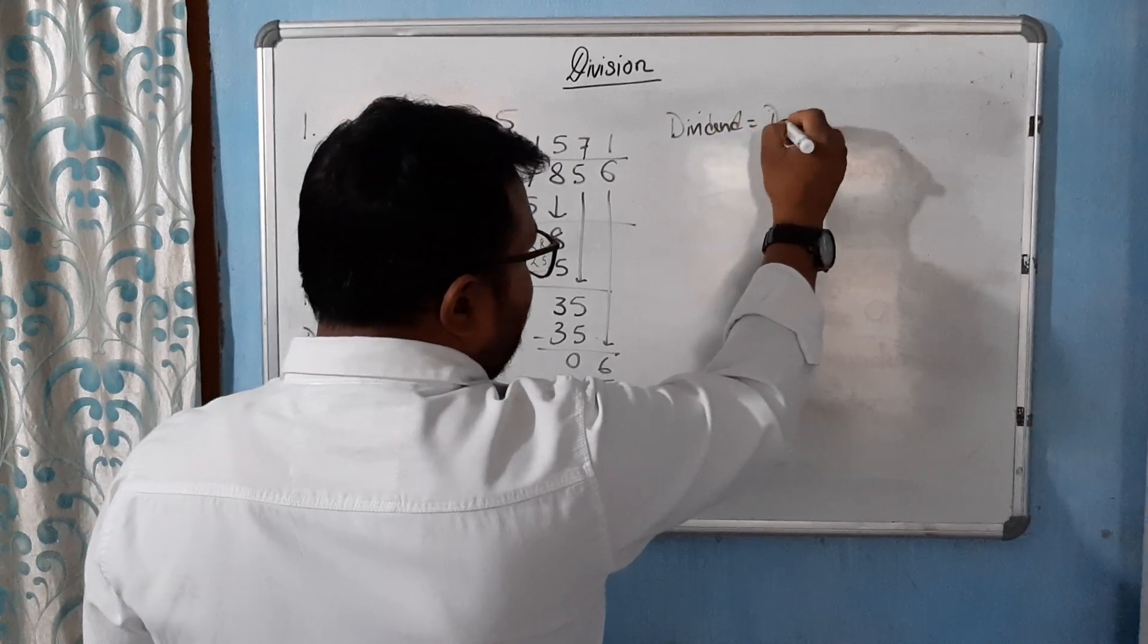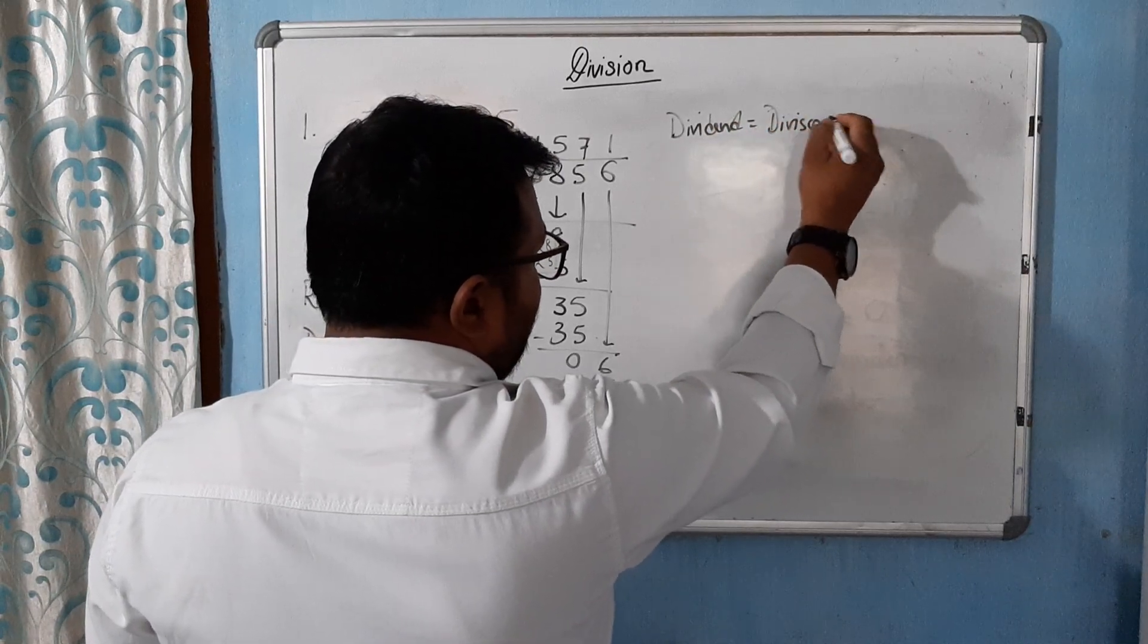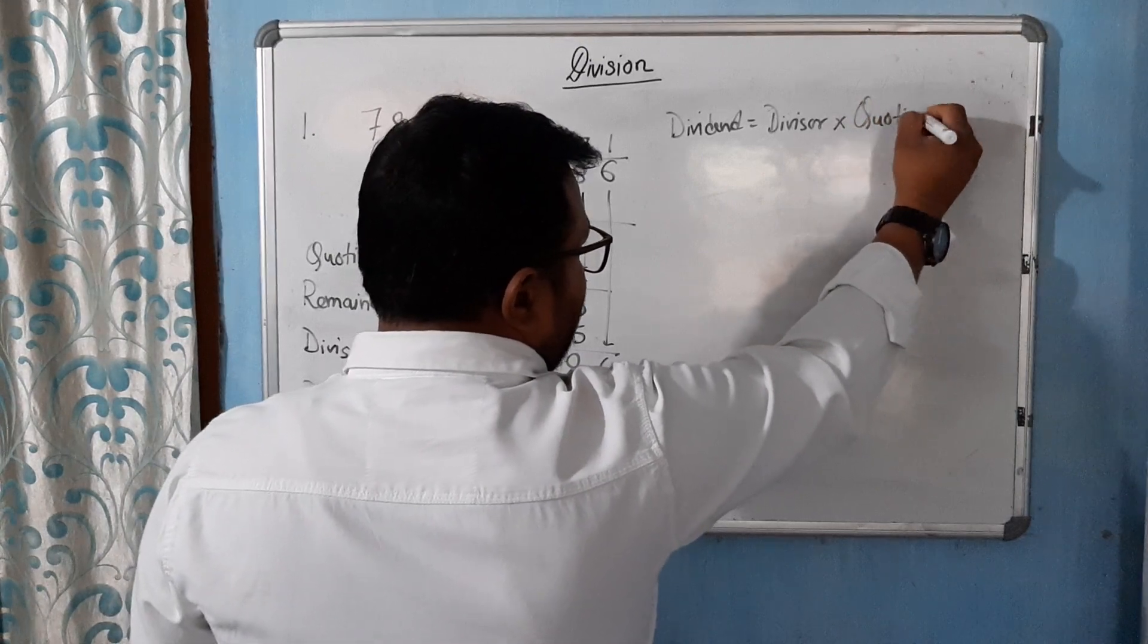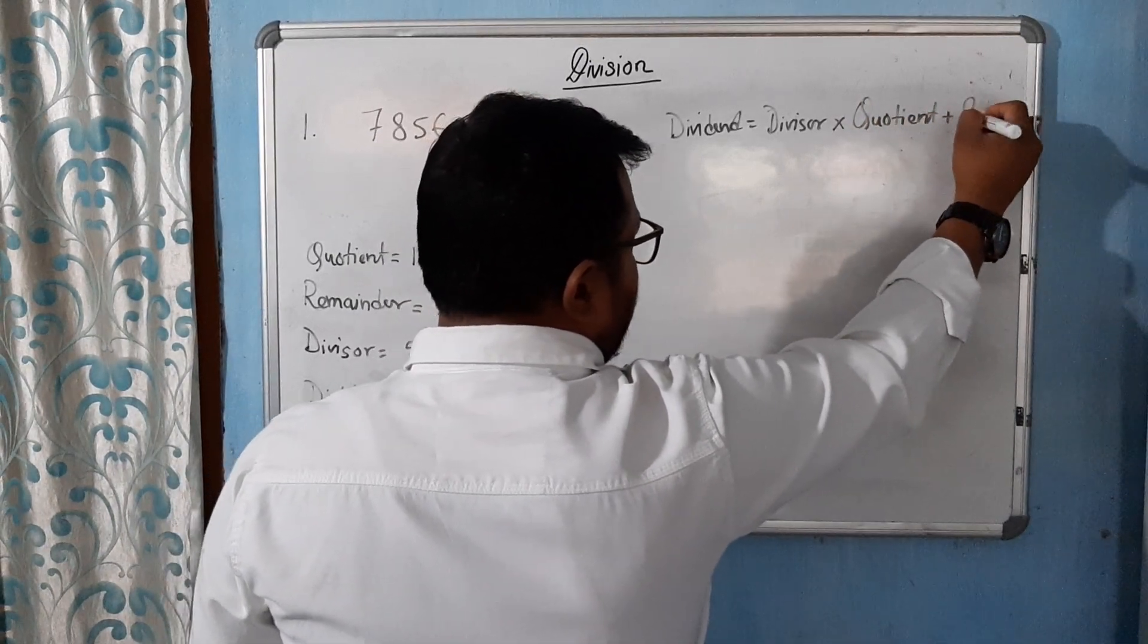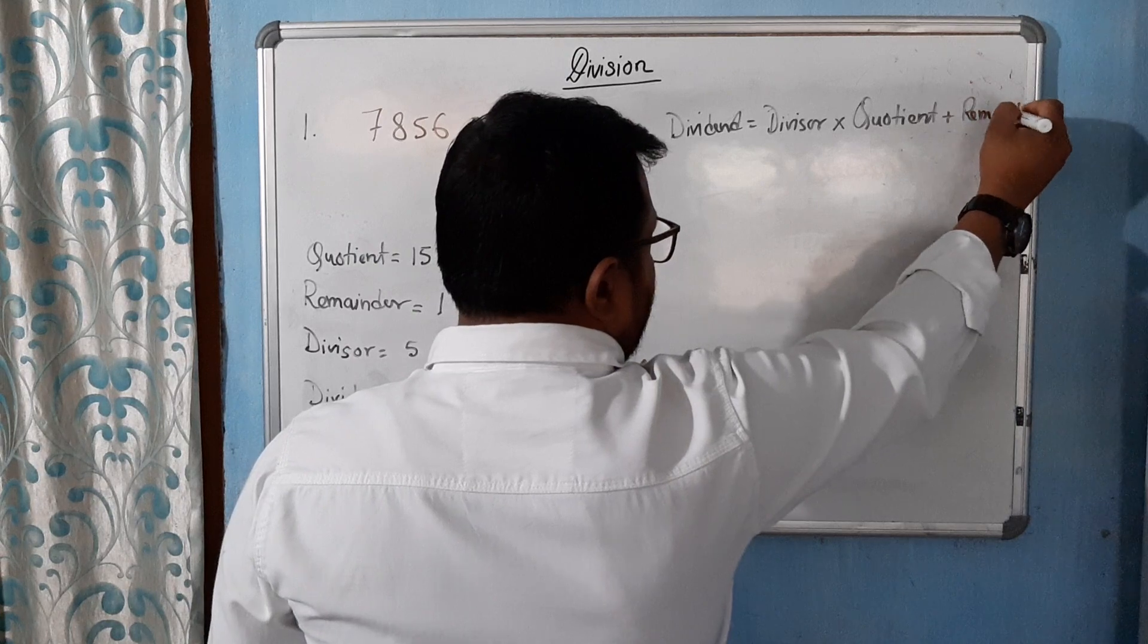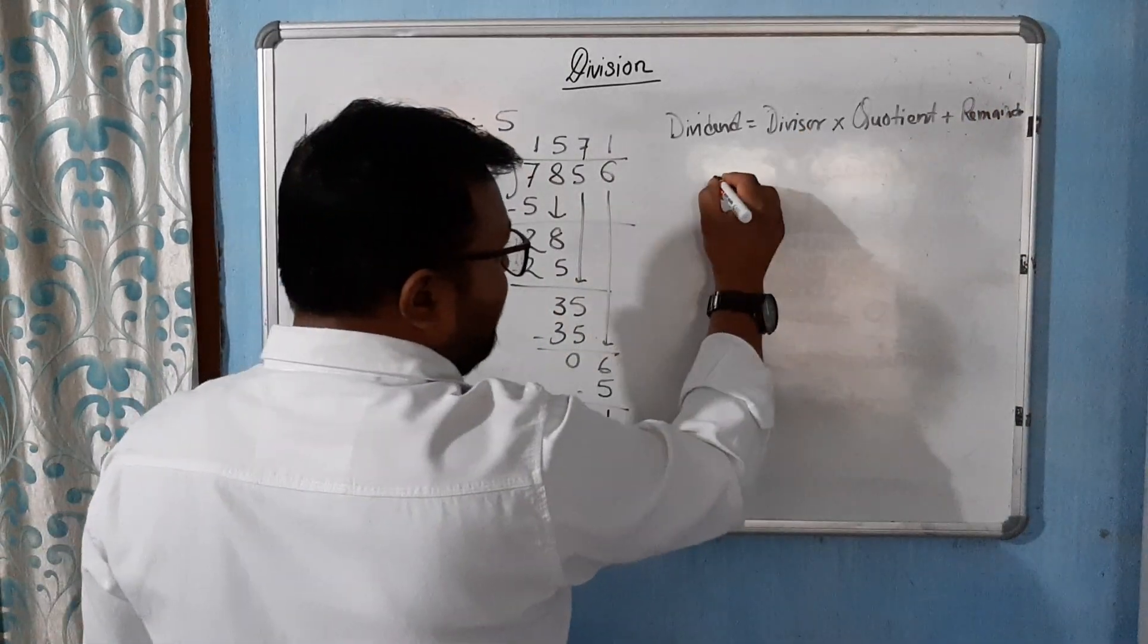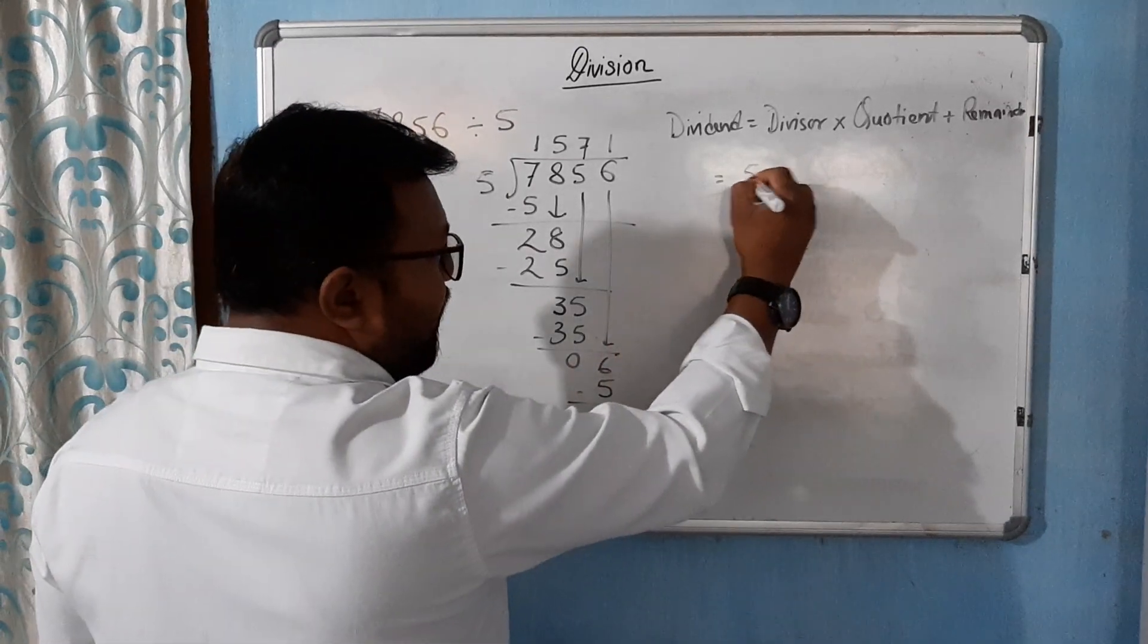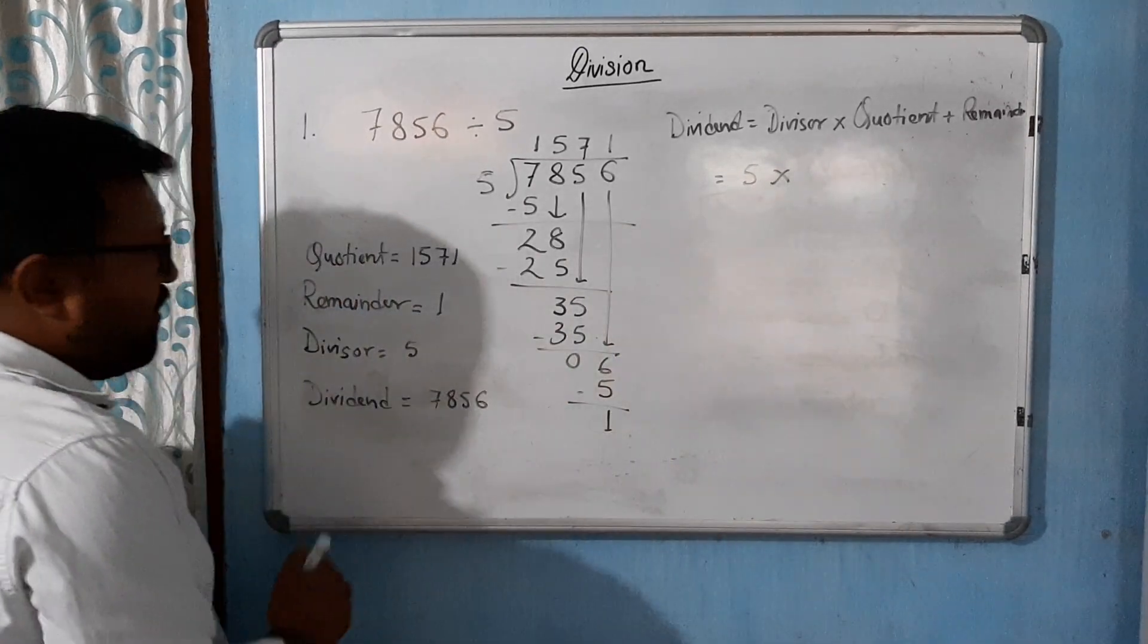And we know that the formula is dividend equal to divisor into quotient plus remainder. Here, divisor equal to how much? We have divisor equal to 5.